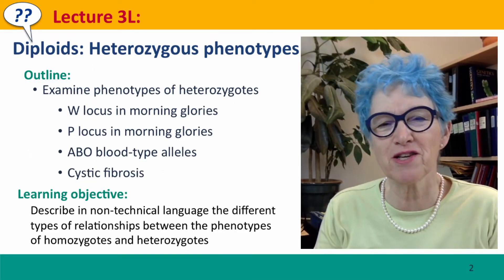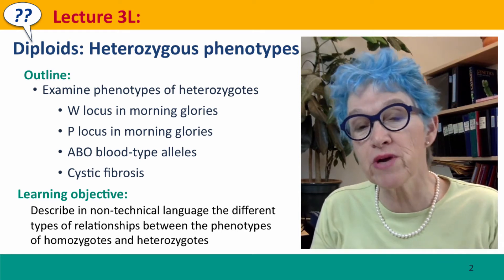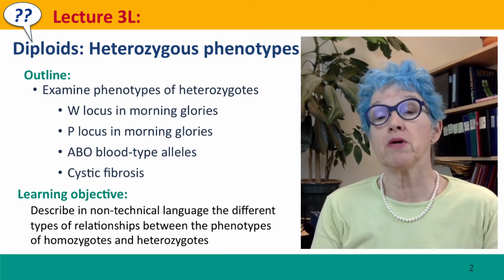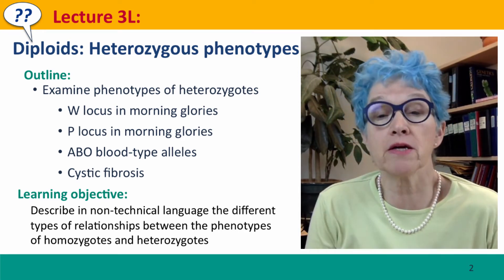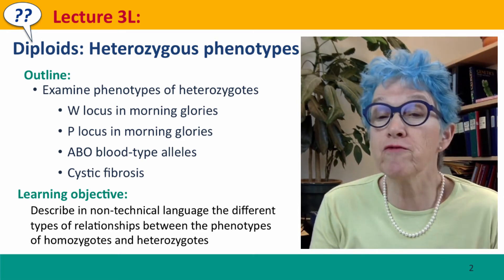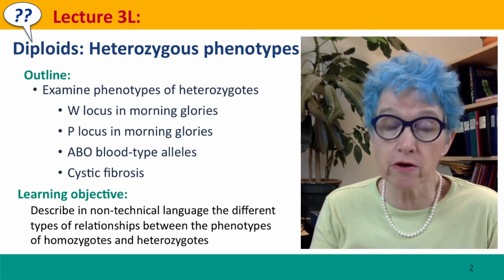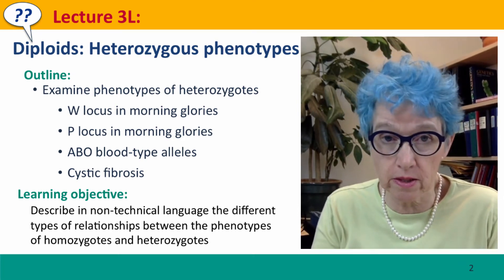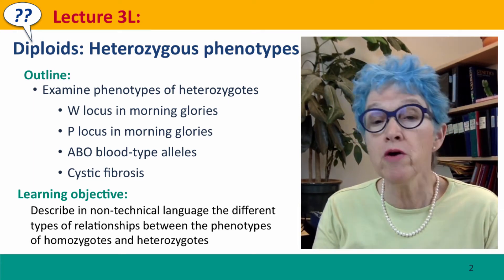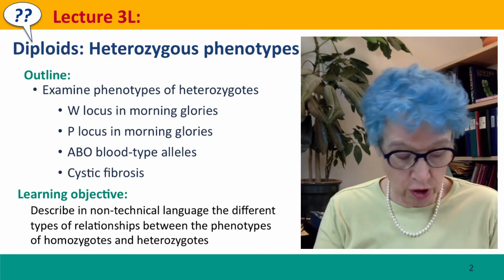Hi everyone, welcome back to Useful Genetics. This is Lecture 3L, where we're finally going to be talking about heterozygous phenotypes — phenotypes where individuals have two different alleles instead of two identical alleles. We'll talk about the same four phenotypes that we discussed in the past two videos.